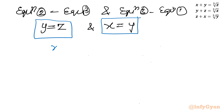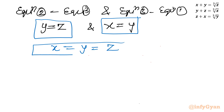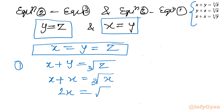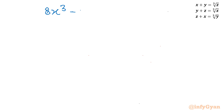Since x = y = z, I substitute into the first equation: x + x = ∛x, so 2x = ∛x. Cubing both sides: 8x³ = x. Taking all terms to the left-hand side: 8x³ minus x = 0. Factoring out x: x(8x² minus 1) = 0.